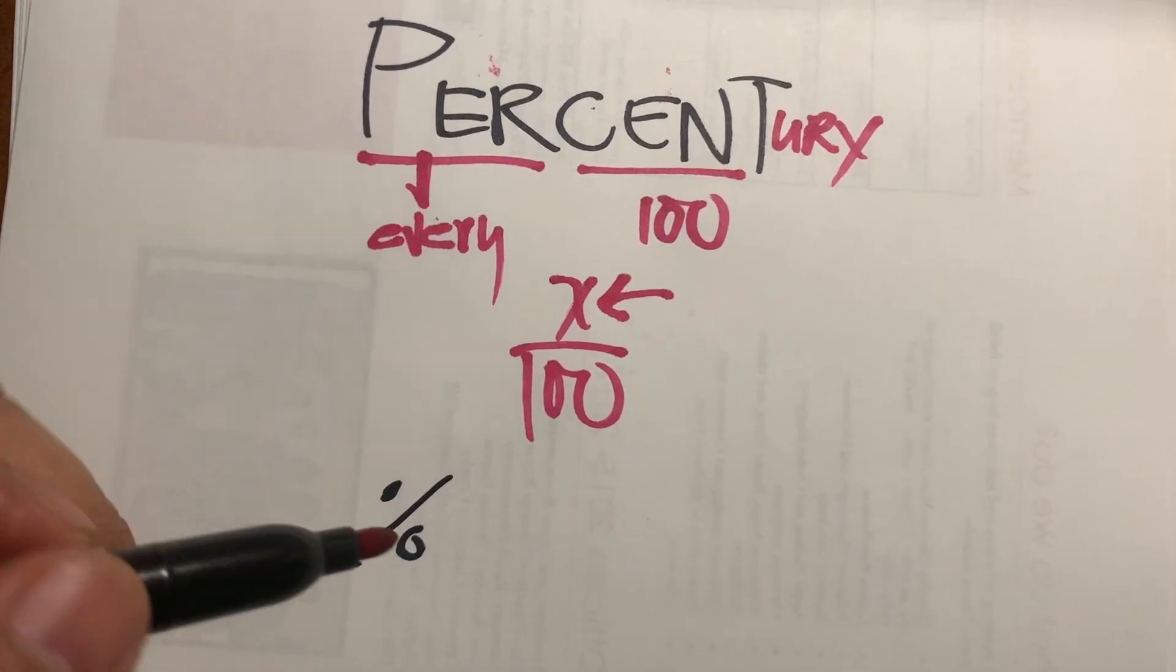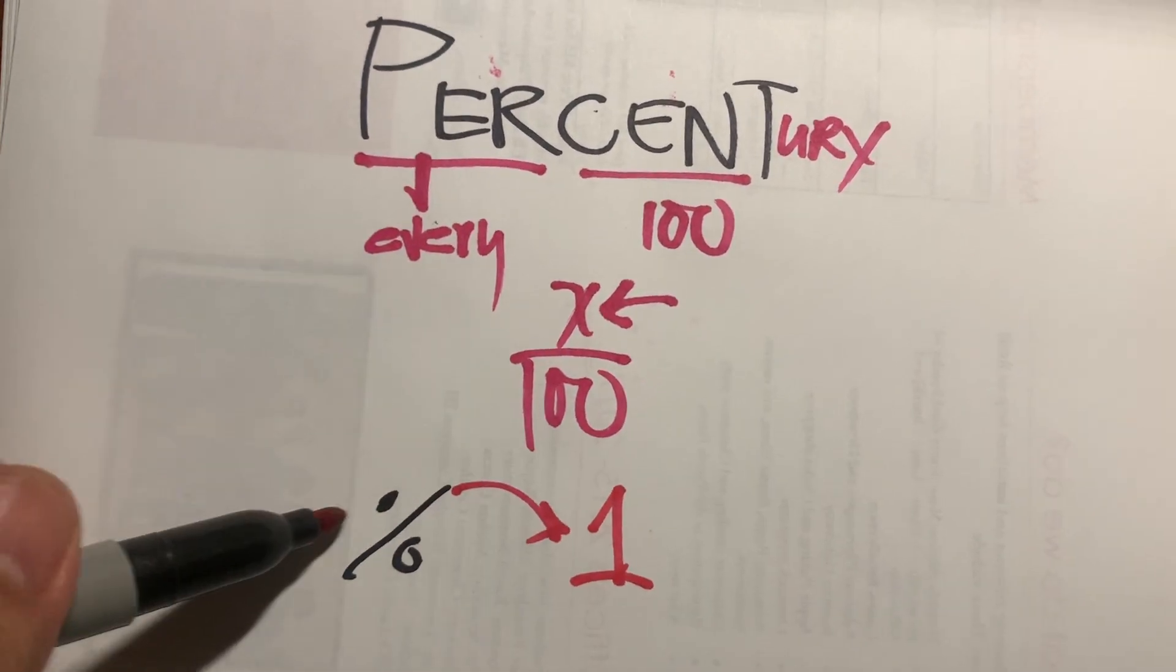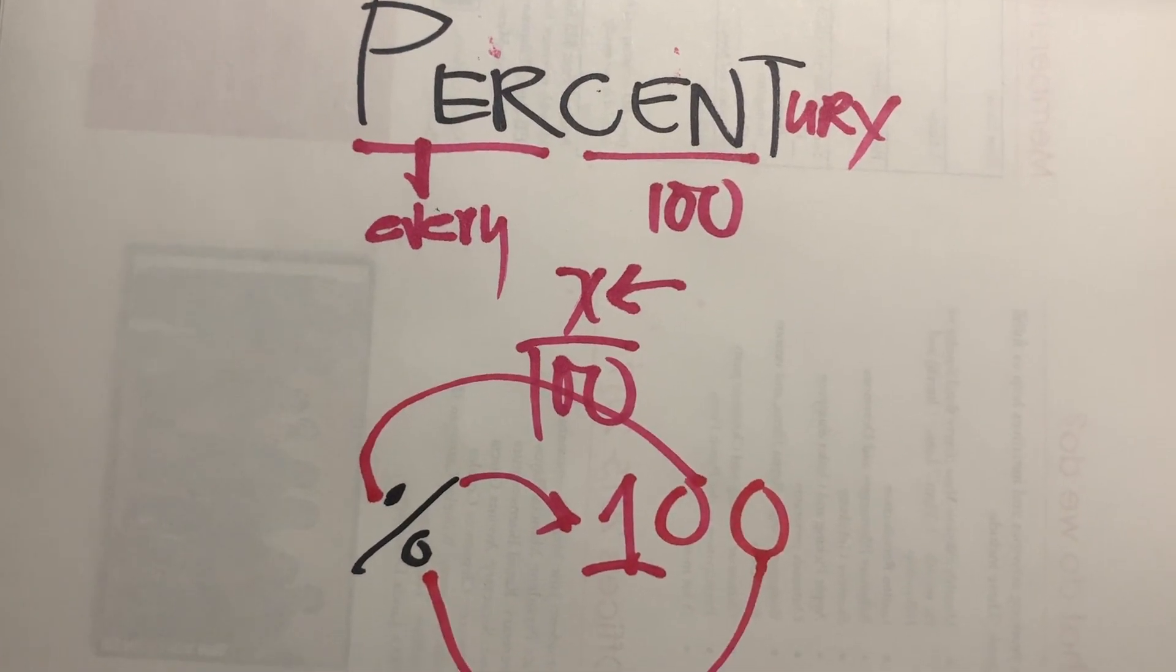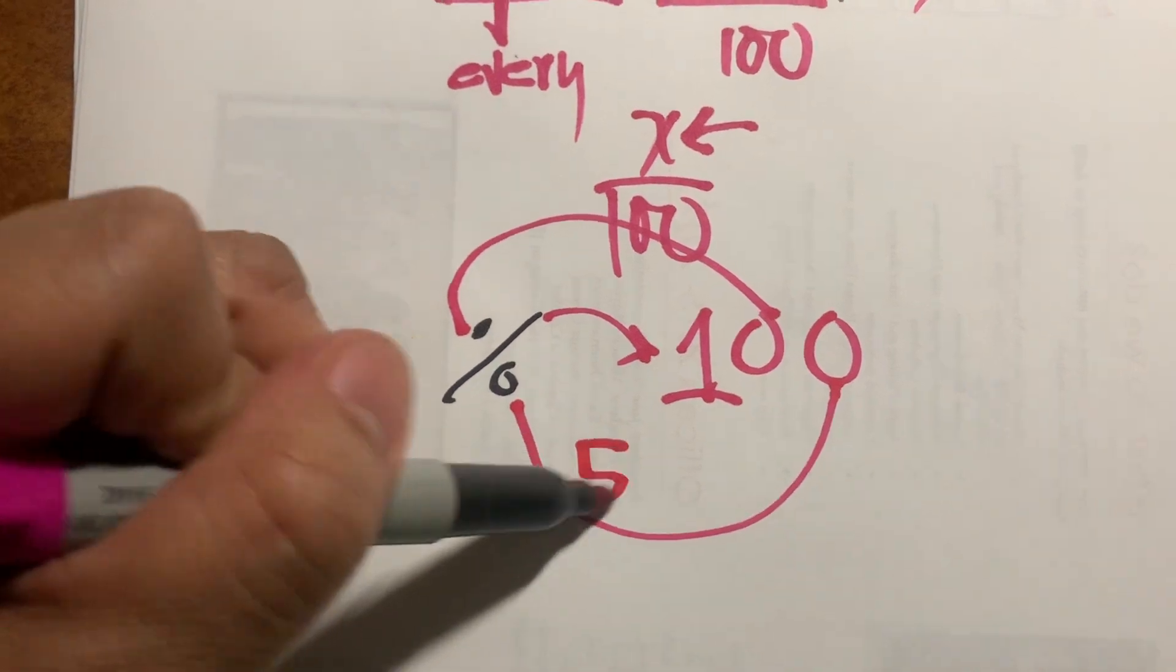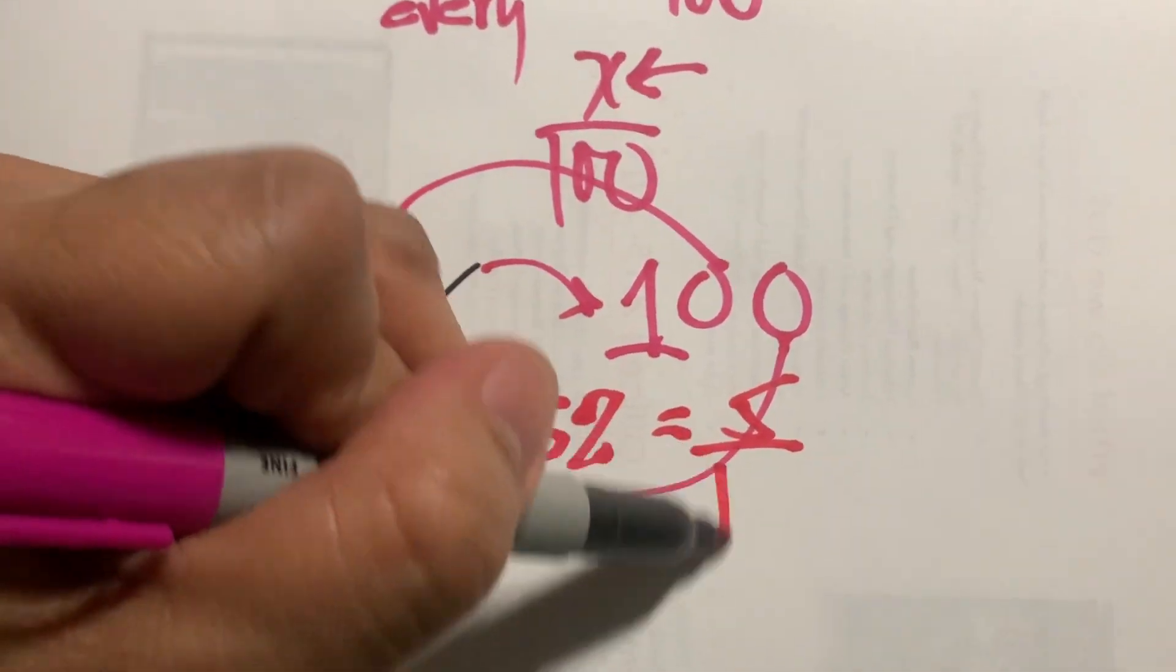The symbol percent means this one is a one, this one is a zero, and this one is a zero. Everything is based on a hundred. Therefore, if you have five percent, that means five out of a hundred.